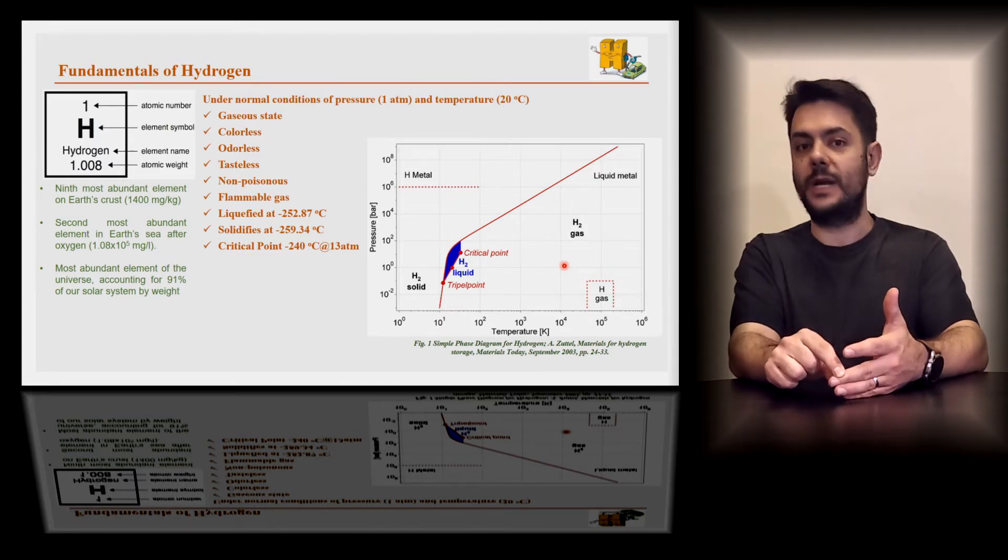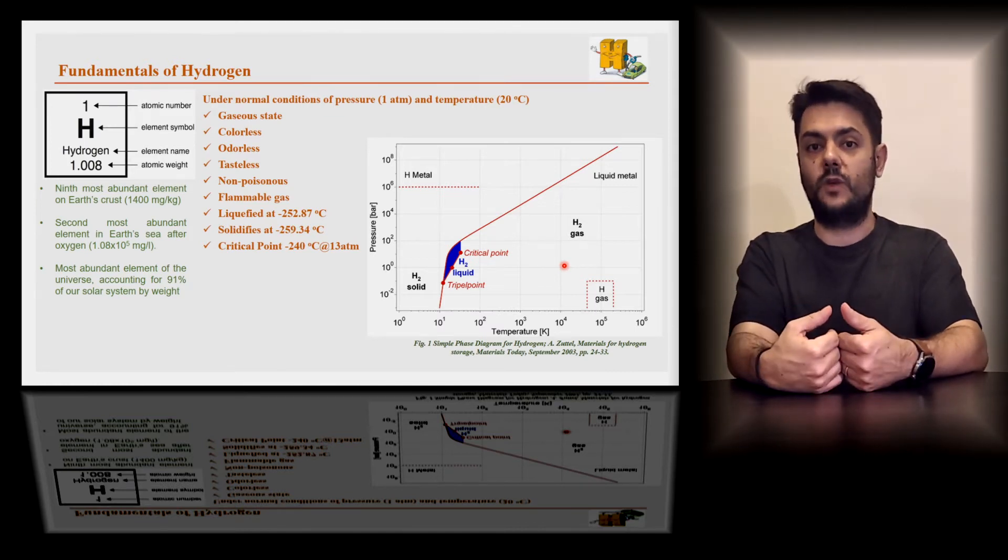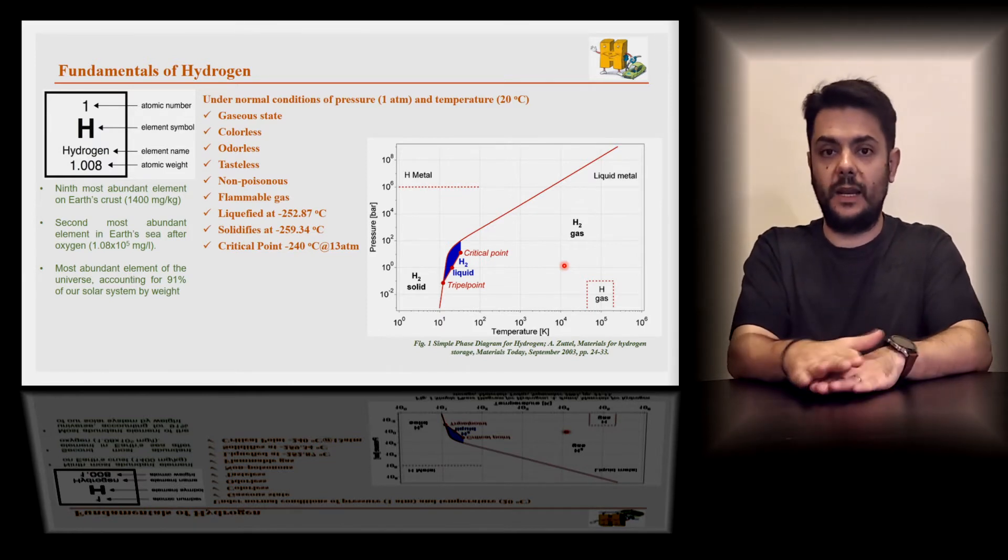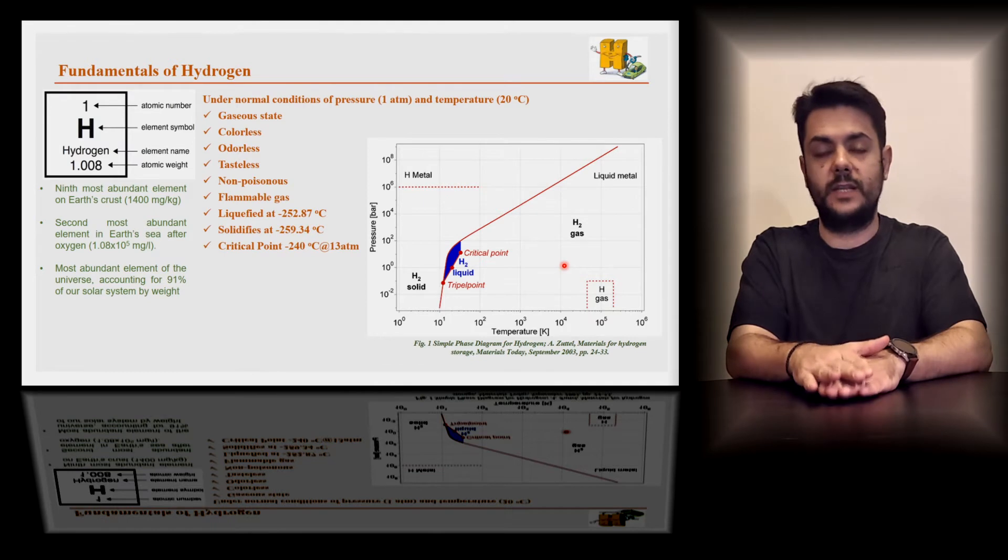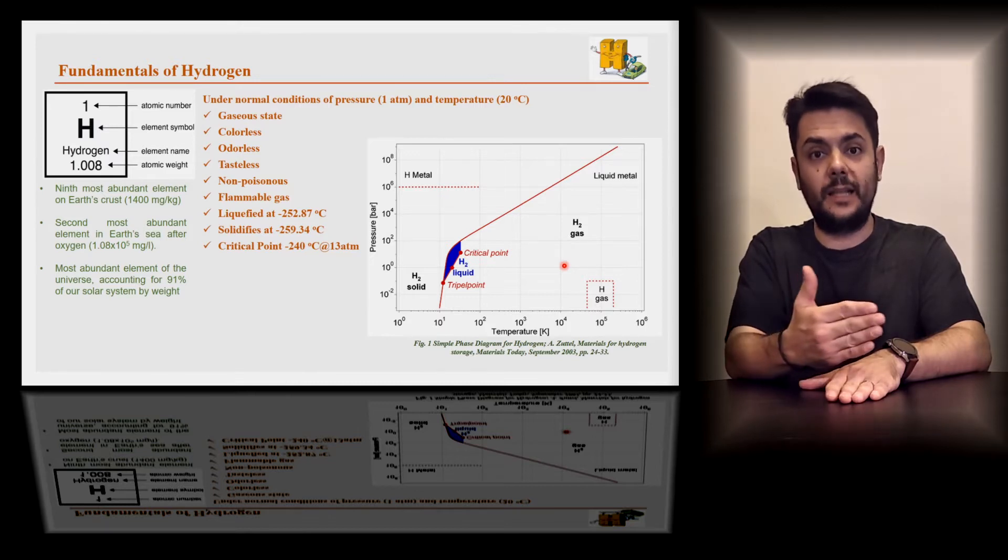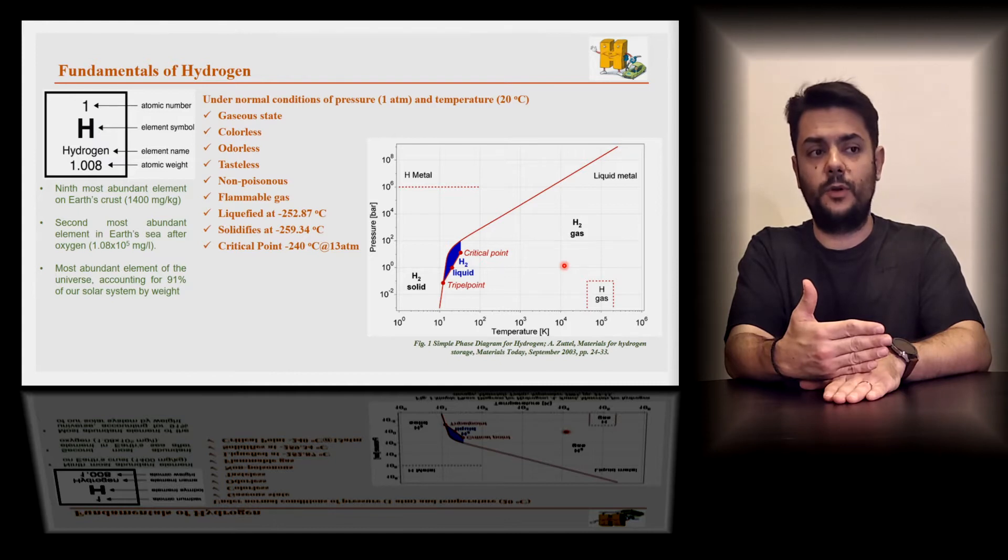We cannot feel it, we cannot see it. At the same time, it's non-toxic, means that we can breathe it and nothing happens to our body, but unfortunately for us, it is quite flammable. Now, if we need to make it liquid, we have to go to really low temperature, we have to reach minus 252.87 degrees centigrade. And if we go a bit lower, at minus 259.34, it solidifies.